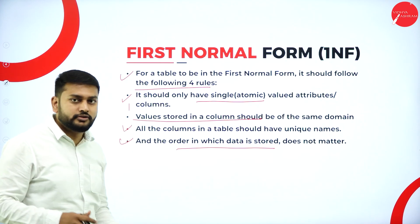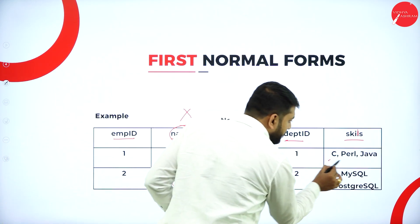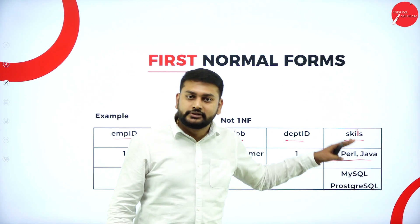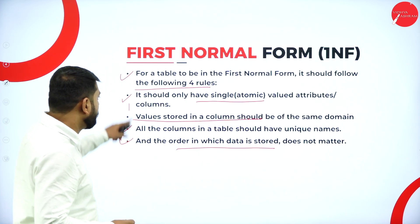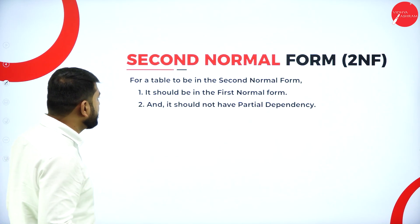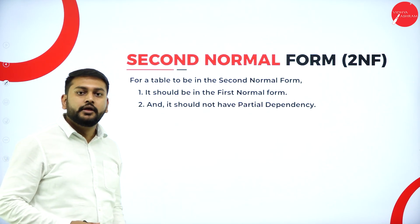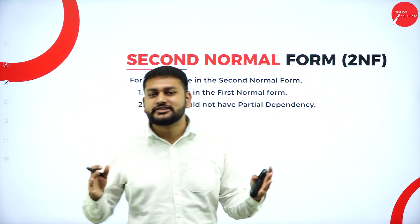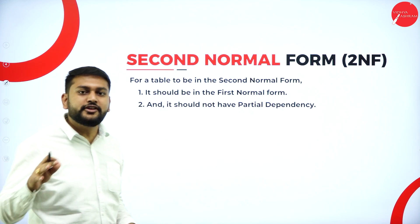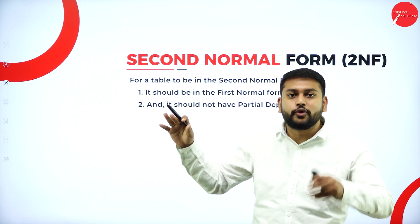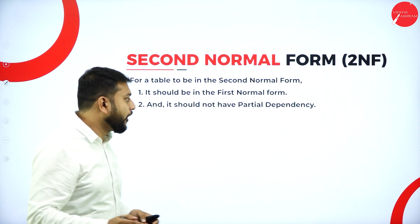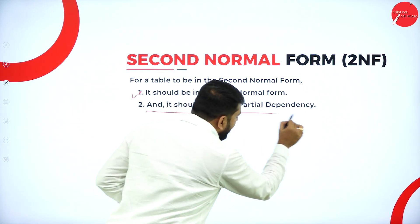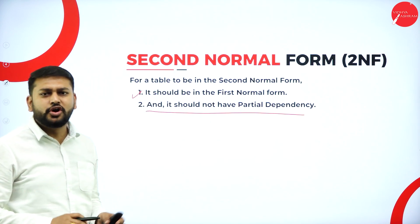Regarding the first rule — single atomic value — you are not supposed to store multiple values in one cell; I should have only one value. That is what you need to remember with respect to first normal form. Moving forward to second normal form: when do I call my table is in second normal form? First of all, my table should be in first normal form — it should satisfy all the four rules we discussed. The second point: it should not have partial dependency.